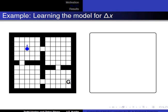As an example, here is the agent learning the decision tree model for the change in the x or the column variable of this agent in this four-room variable domain. So at the start, the agent has no model. It has no idea what will happen.